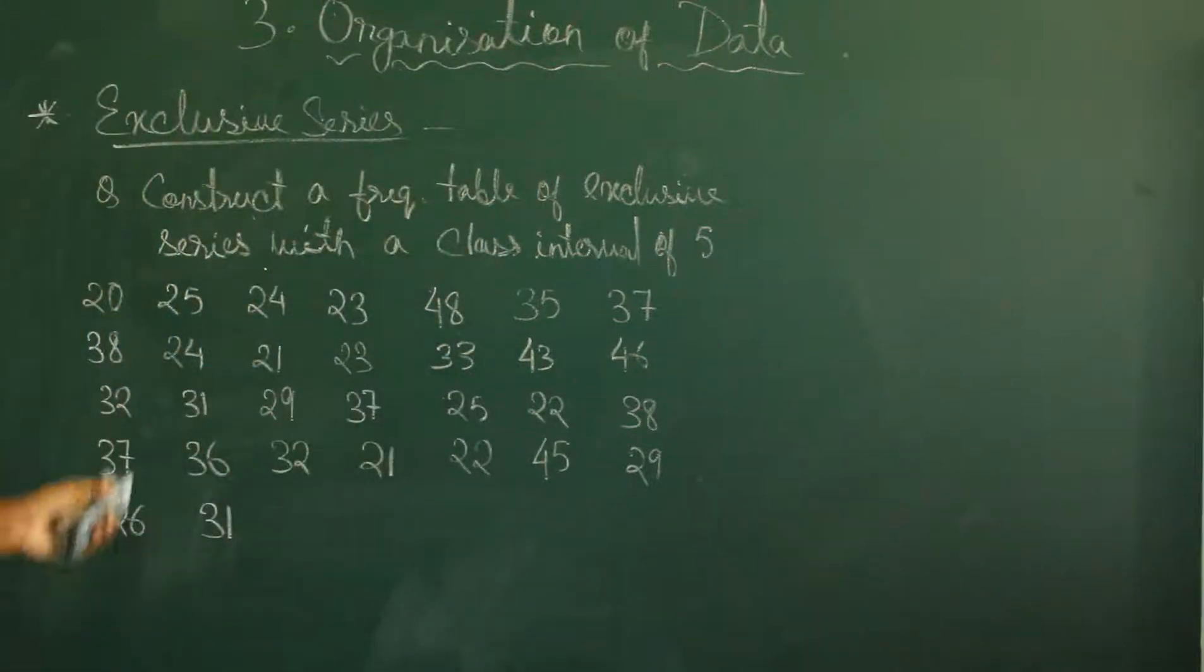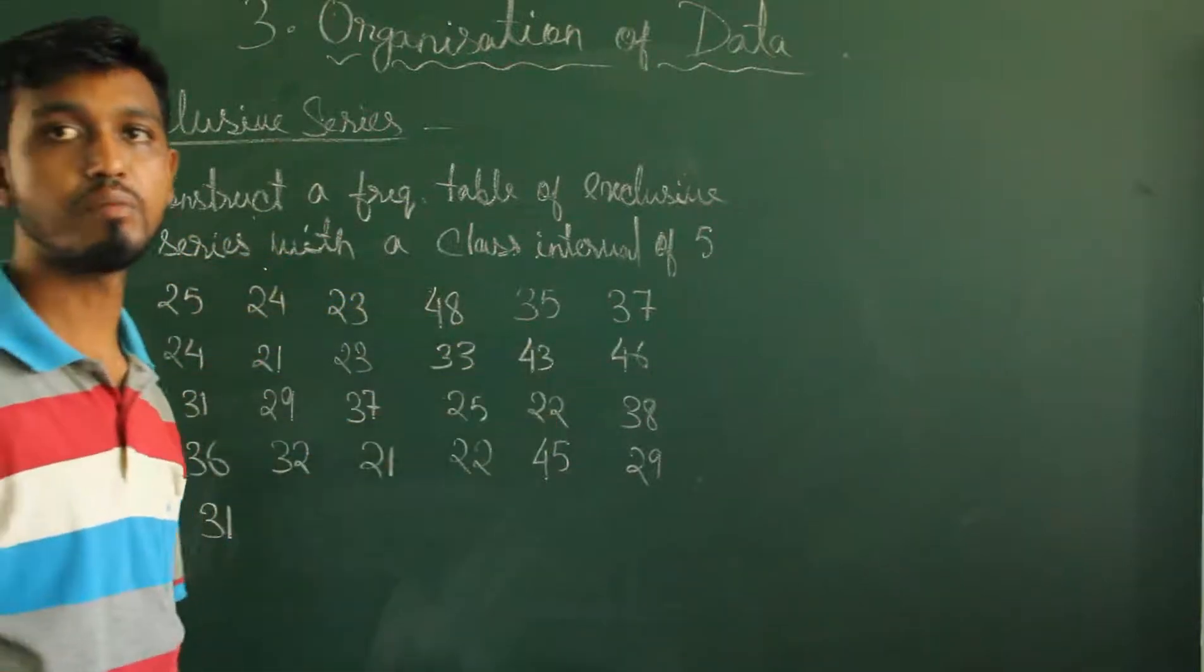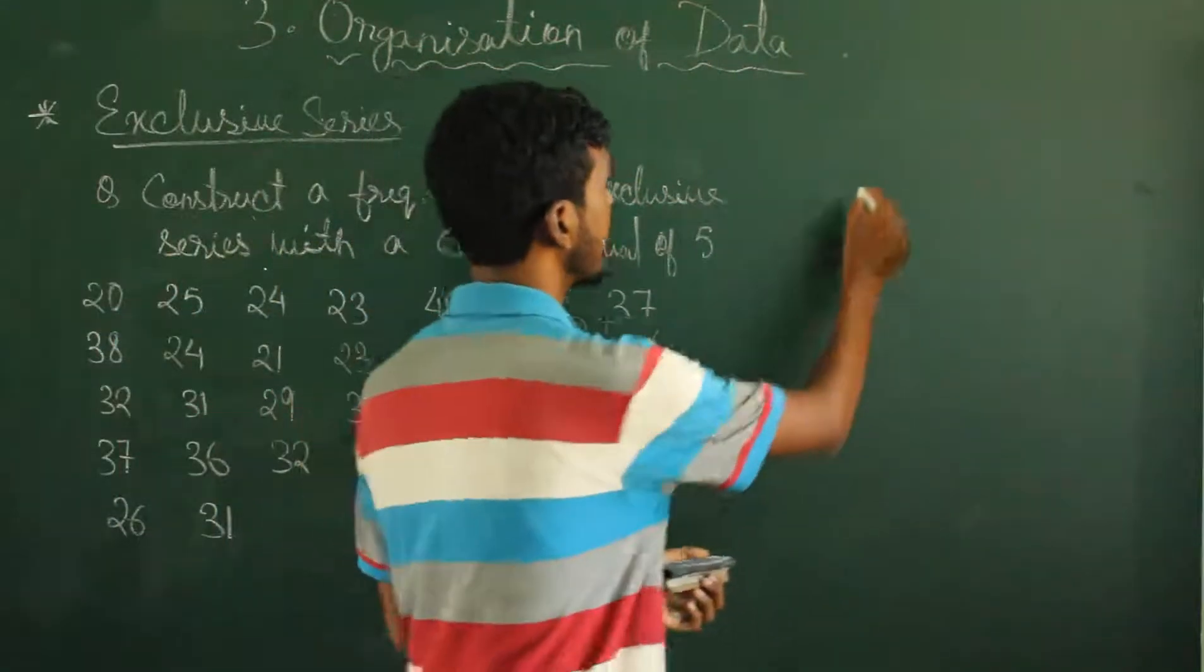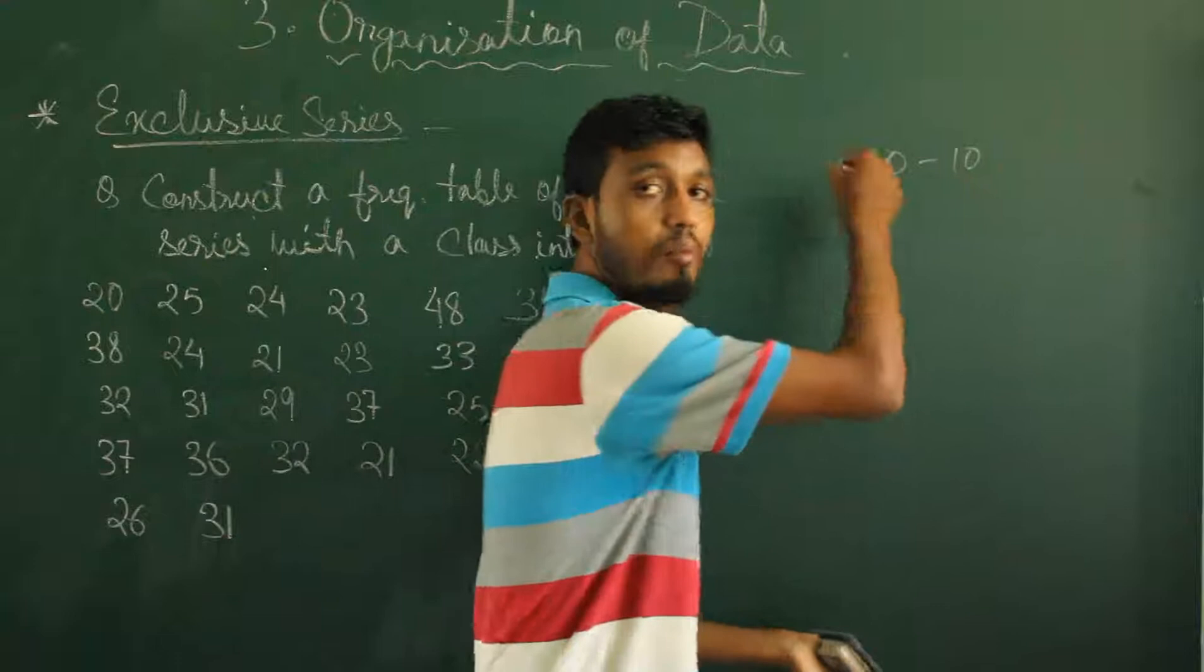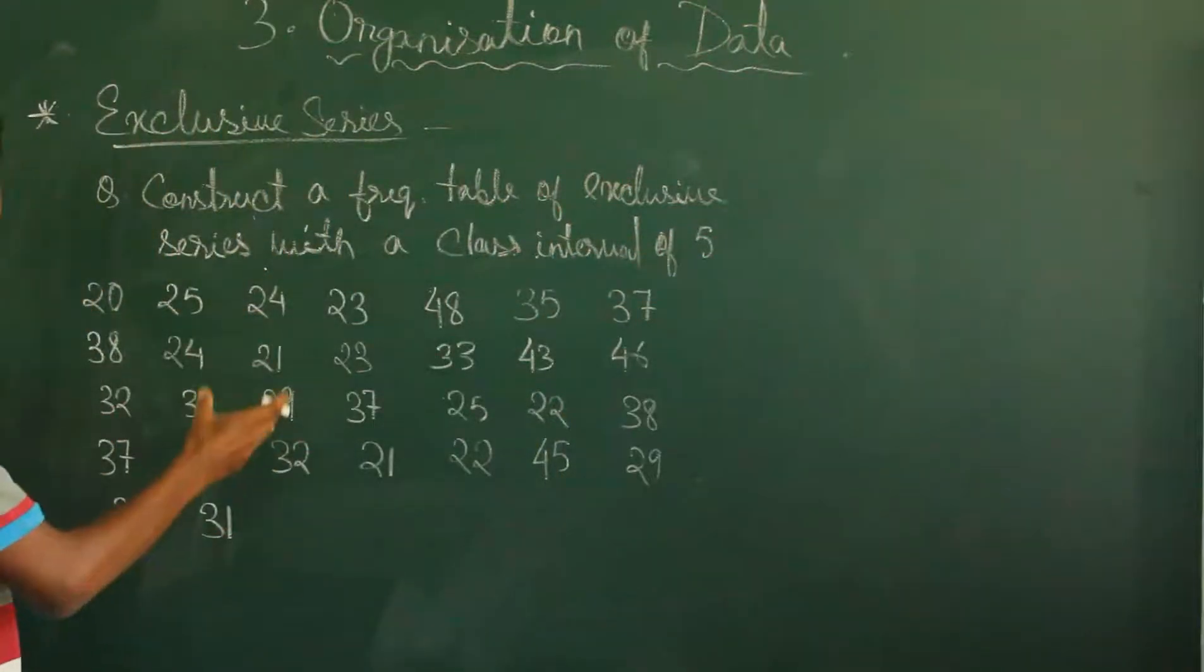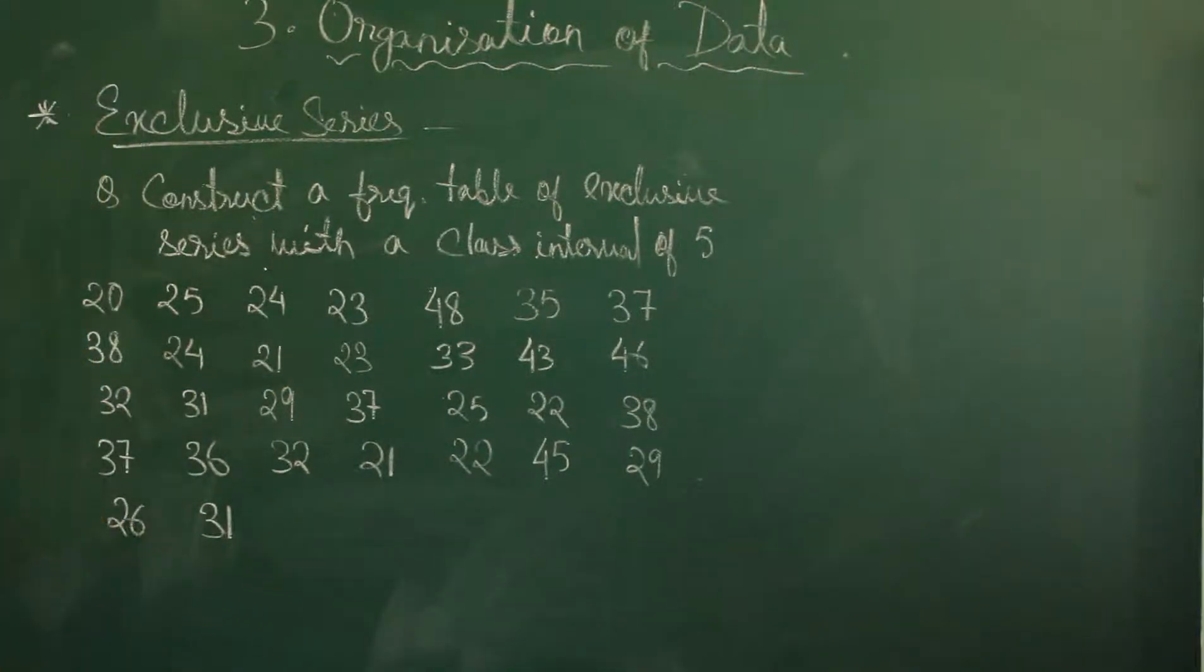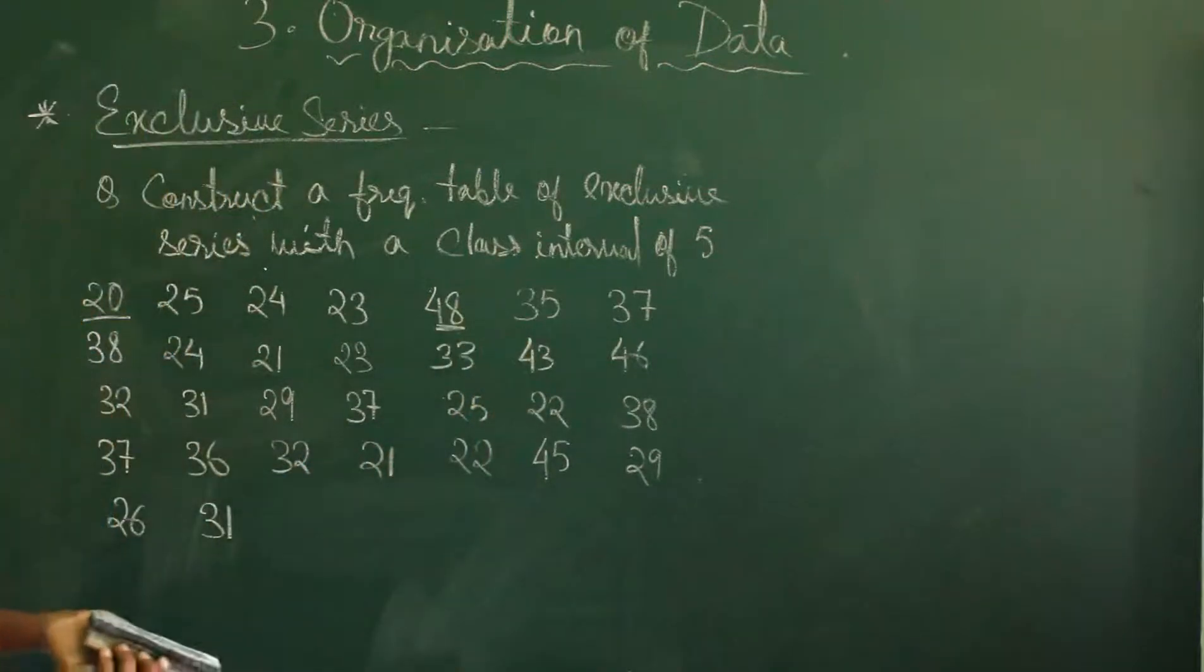So exclusive series we will understand with the help of an example. Here it is given, construct a frequency table of exclusive series with a class interval of 5. Class interval of 5 means the gap should be 5. Like here class interval is how much? It is 10, upper limit minus lower limit.